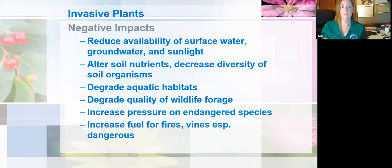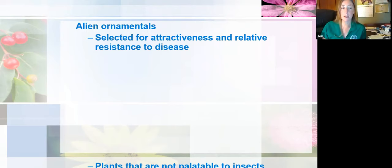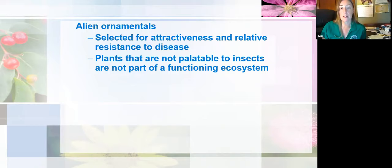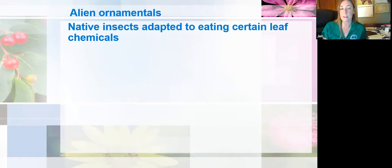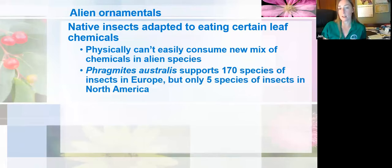Alien ornamental plants brought here for landscaping are often selected because they're attractive and relatively resistant to disease. But that doesn't mean they don't carry exotic diseases and insects from other countries — diseases and insects that our species don't have resistance to. The plants brought here are not part of a functioning ecosystem, and the insects here can't possibly eat those leaves, because native insects have adapted over long periods of time to eating certain chemical compounds found in leaves and can't suddenly consume a new mix of chemicals. For instance, Phragmites supports 170 species of insects in Europe, where it's from, but only five species in North America.